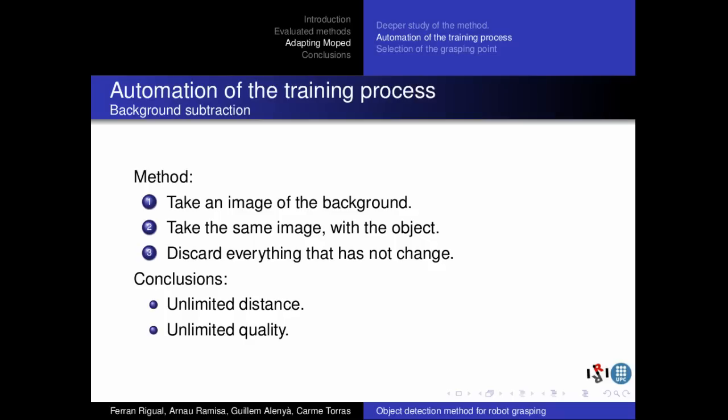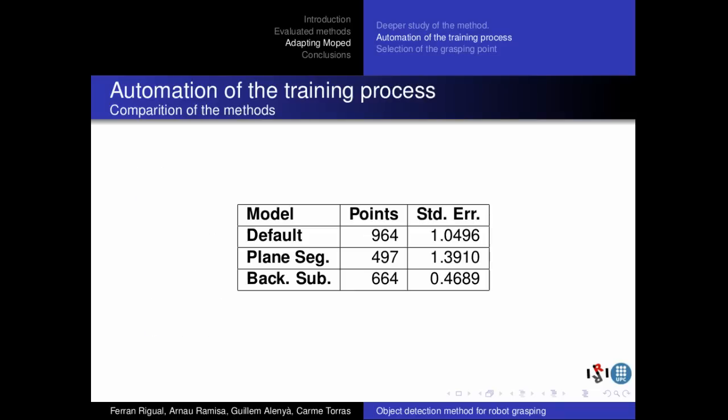The second attempt is background subtraction. An image of a fixed background is taken without the trained object. Then the object is positioned on the scene and another image is taken. When comparing both images, the only changing region corresponds to the object and it's painted in white, while the rest of the image is painted in black. Since the depth information is not used in this method, the previous limitations don't apply and there is no limit on image quality. A table compares the quality of the object models obtained with each one of the tried methods. Even when the default method gets a higher number of points in the model, resulting in a bigger amount of information, the background subtraction method has the lower error, so it was considered the best method in this project.